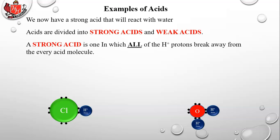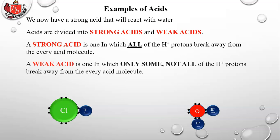A strong acid is one in which all of the H+ hydronium ions or protons break away from every acid molecule. When you have a strong acid such as hydrochloric acid, every time you put one in water that proton on the HCl will break away, move over to the water molecule, and leave its electron behind on the chlorine.